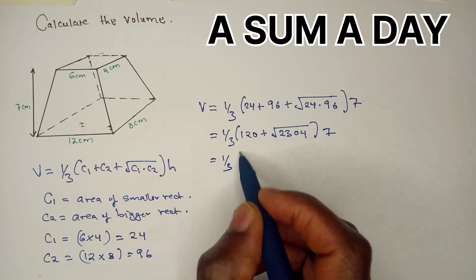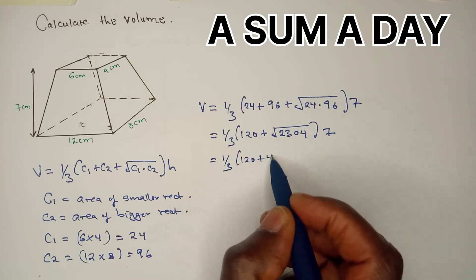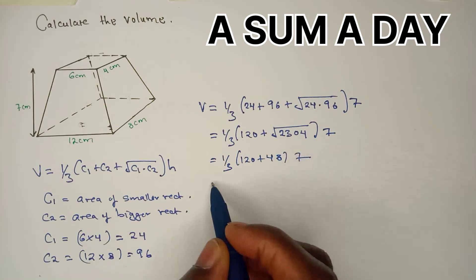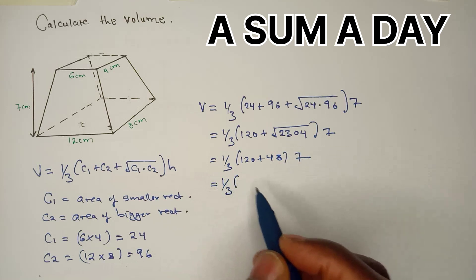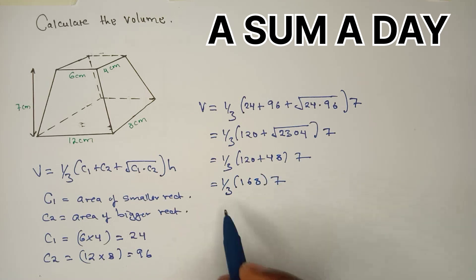The square root of 2304 from your calculator you'll get 48. So this one will be one over three, 120 plus 48 multiplied by 7. So you'll have one over three into 120 plus 48, you'll get 168 multiplied by 7. When you simplify this using your calculator, you'll get 392.